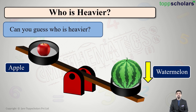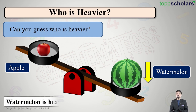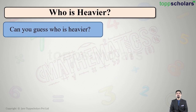The pan in which the apple is kept is upwards. What do we understand? The pan that goes down has got more weight. Therefore I can say watermelon is heavier. Let's try one more example — we have to guess who is heavier.